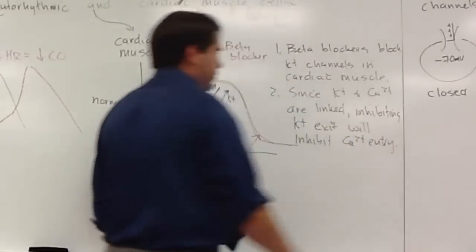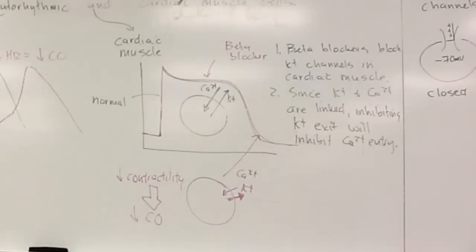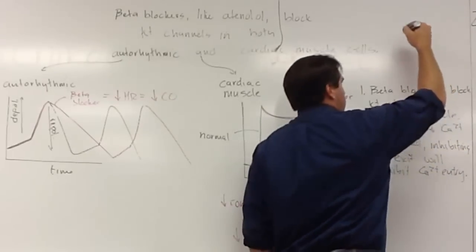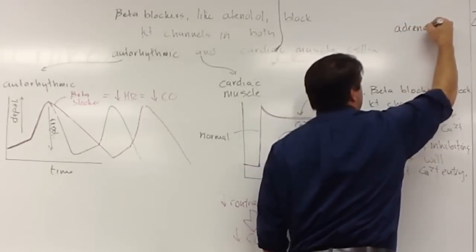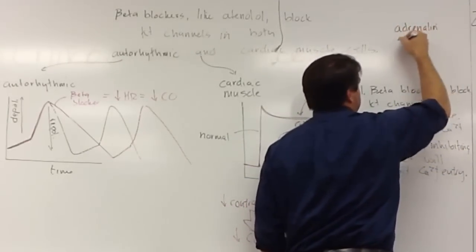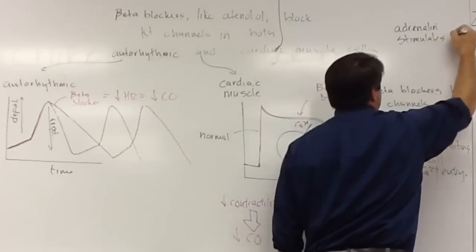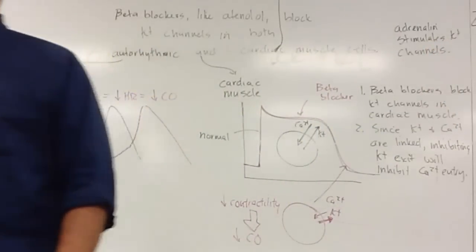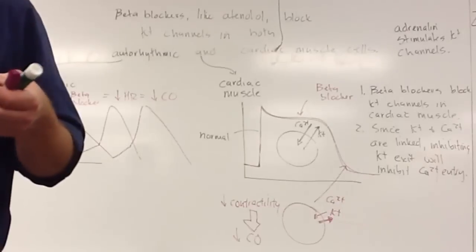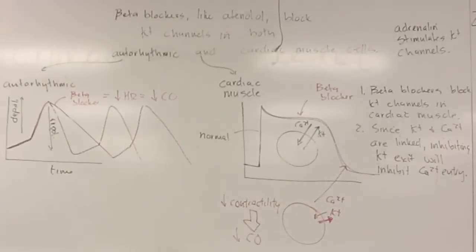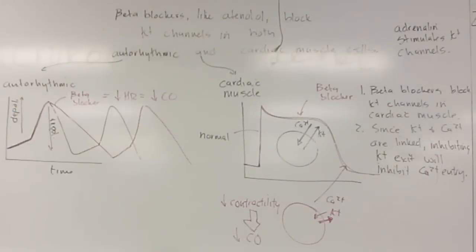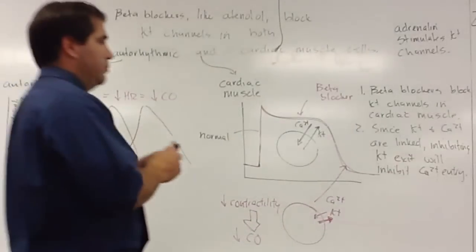And to be honest, some websites that you go to will say beta-blockers actually block calcium channels because it's really hard to know if it's blocking the potassium or the calcium. The reason I go with potassium is because adrenaline stimulates K-channels and beta-blockers block adrenaline. That's essentially the effect of a beta-blocker, it blocks the stimulation by adrenaline. So since adrenaline stimulates potassium channels, beta-blockers block potassium channels. It's not directly, but they just block the adrenaline stimulation.